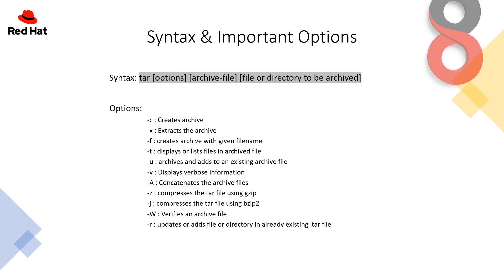What is the syntax? First we need to mention tar, then the options which I have listed here. Then we have to mention the archive file name, which we want to be like file.bzip or file.zip. Then we have to mention the file or directory to be archived — for example, if I have a folder named file1, I will mention /file1.